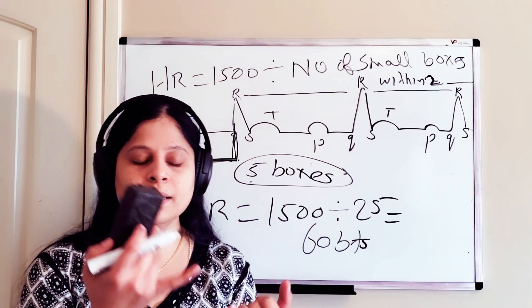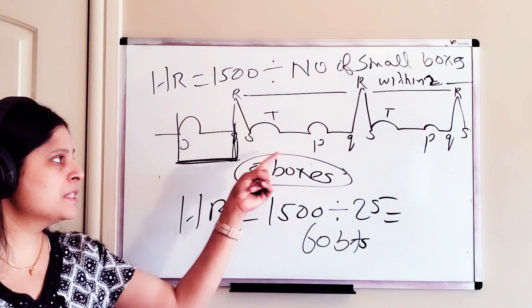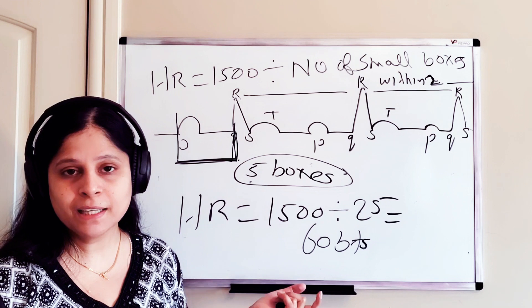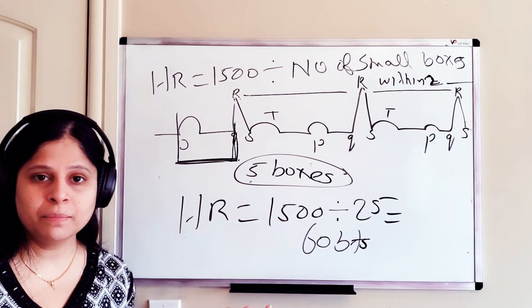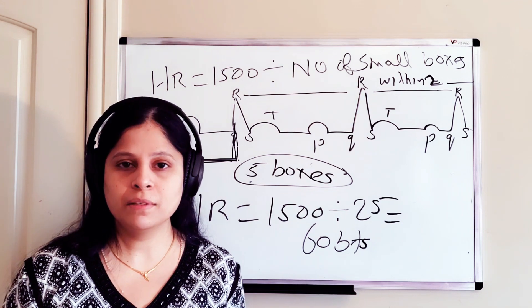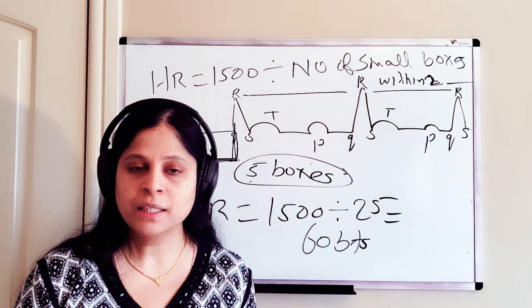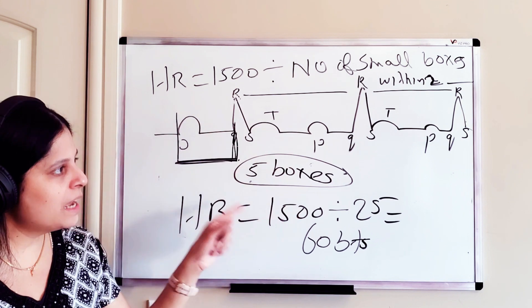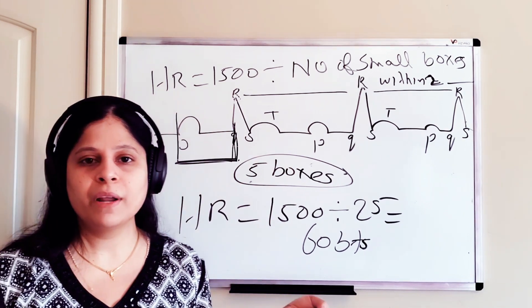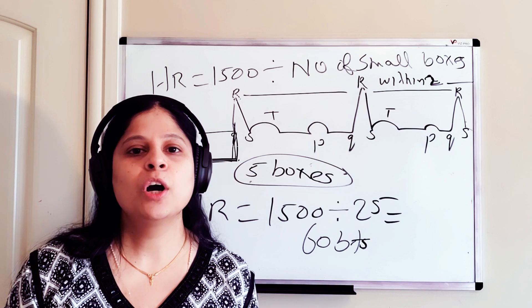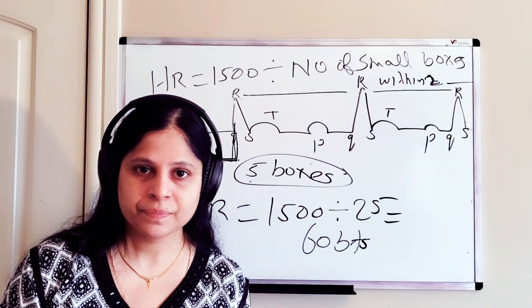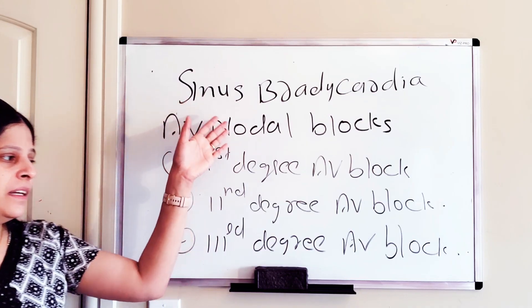So you can see the P wave, QRS complex, and T wave — nothing is missing. The PR interval is the same, and the RR interval is within three to five big boxes. Almost everything is within normal range, so you can say this is a normal sinus rhythm. Now that you understand how to recognize a normal ECG rhythm from an abnormal one, we can look at bradycardic rhythms.